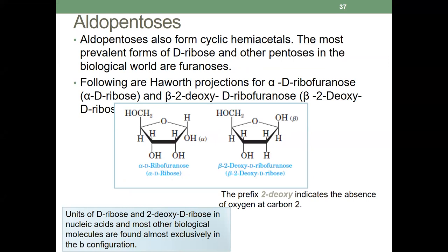Now focusing on five-membered monosaccharides. We have the aldopentoses here. All the pentoses also form cyclic hemiacetals and the most prevalent forms are D-ribose and the other pentoses. The following are the Haworth projections of alpha-D-ribopyranose and alpha-D-ribofuranose, and beta-2-deoxyribofuranose.